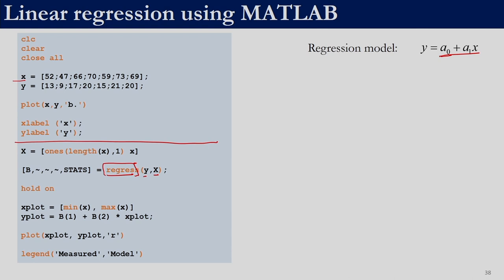In this case we have only one independent variable x, but the model we want to fit is a₀ + a₁x. The regress function is based on general linear least squares, so we must stack the independent variables with a column of ones if our model has an intercept. Since there are 7 data points, we need a column of ones with 7 rows, generated using the ones() function.